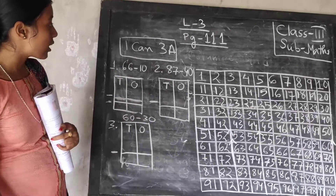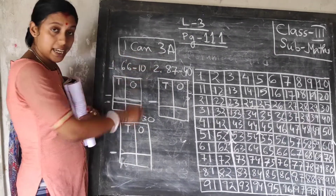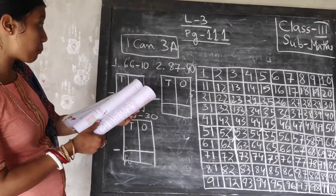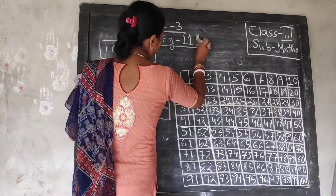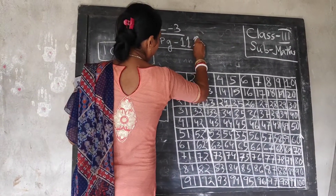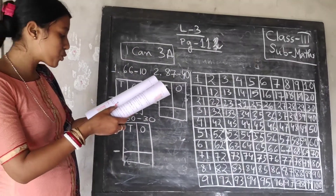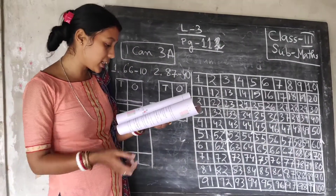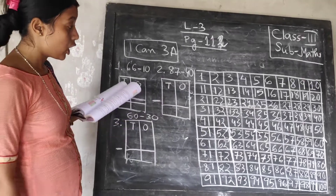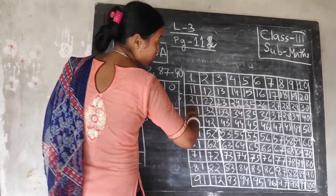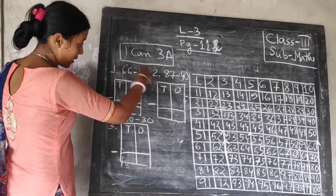Now, we will start exercise 3A in our book. Page number 112 now. You are going to take your book, page number 112, and start doing. Number 1: Use the number grid given on the previous page to subtract the following. You have to use this number grid to subtract all of these.